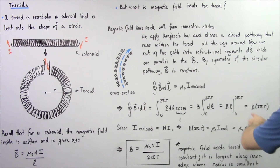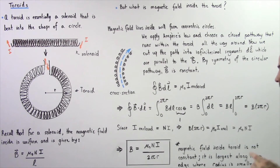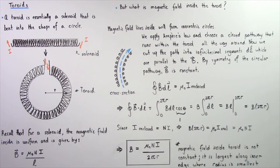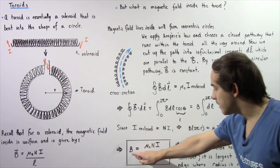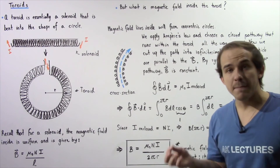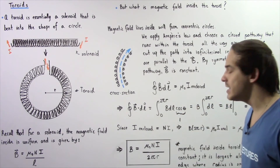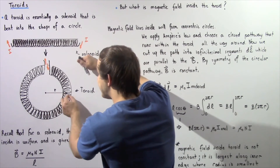The electric current enclosed inside the chosen region equals the number of loops N multiplied by the electric current I. So the right side of Ampere's equation becomes μ₀ multiplied by NI, and that equals B multiplied by 2πr. Solving for the magnetic field, we get B equals μ₀ — the permeability of free space — multiplied by N the number of loops, multiplied by I the electric current, divided by 2πr, where r is the radius at the chosen point.